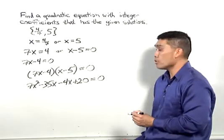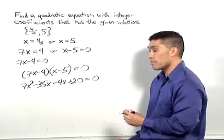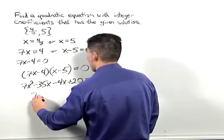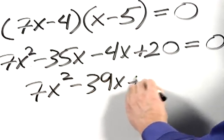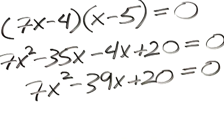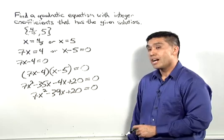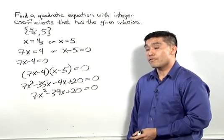Finally, let's combine those two inner-like terms. 7x squared minus 39x plus 20 equals 0. And from those two solutions, we have now been able to write out a quadratic equation in standard form with integer coefficients.